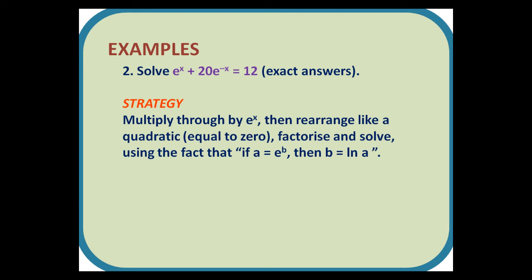Question 2: Solve e^x + 20e^(-x) = 12, giving exact answers. Strategy: Multiply through by e^x, then rearrange like a quadratic equal to 0, factorize and solve, using the fact that if a = e^b, then b = ln a.